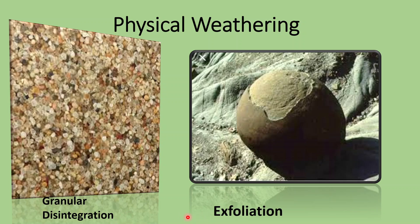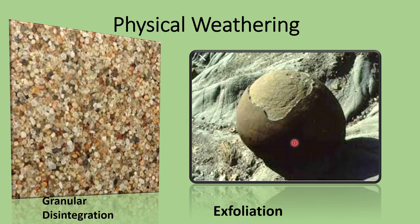Some rocks are not very good conductors of heat. In such rocks, the outer layers expand and contract more than the inner layers. This results in the peeling off of the outer layer of the rock in concentric layers, just like the peeling of an onion, and this process is known as exfoliation.